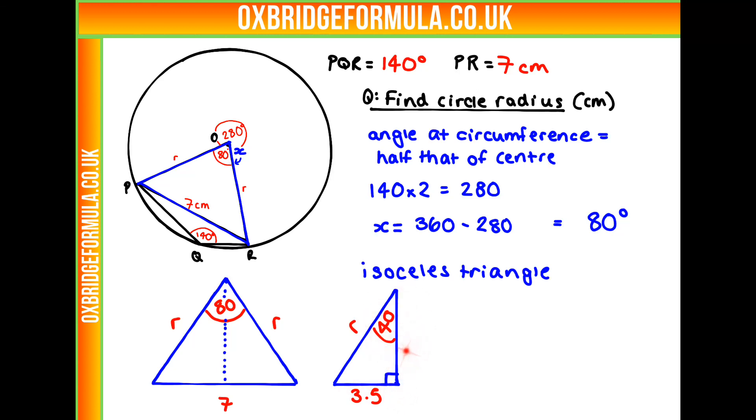So now using trigonometry, we can work out what R is. But which operation do we need to use? We have two lengths. We have the opposite length to the angle and the hypotenuse. And what trigonometric function does that equate to? That's going to be the sine. So if we do the sine of 40, that is going to equal our opposite, which is our 3.5, over our unknown length, R.